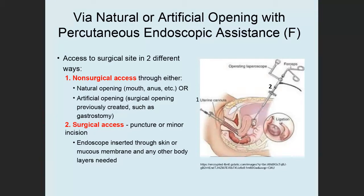Approach value F includes via natural or artificial opening and an endoscope, like the previous approach, but the difference is there's also a percutaneous component. So there are two parts: a non-surgical part through a natural opening, and a surgical component — an endoscopic puncture or minor incision to insert the endoscope through the skin. This approach has two different types of access.